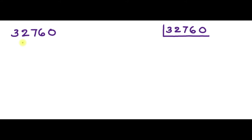First question: express 32760 as the product of its prime factors. As already mentioned, any natural number can be written as the product of its prime factors. To find the prime factors of 32760, we start dividing: 32760 is divisible by 2, giving 16380.